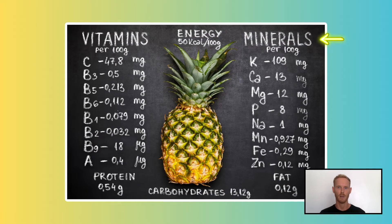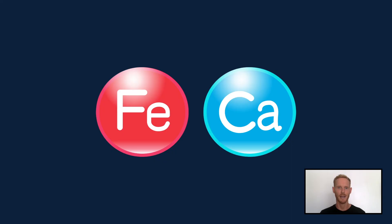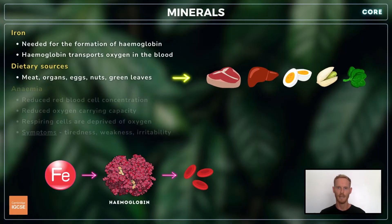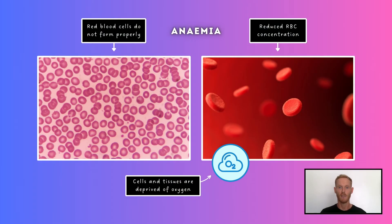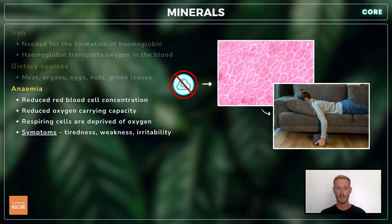Mineral ions, sometimes referred to as mineral salts, are needed in small quantities and are essential for a wide range of bodily functions. There are two you need to know about: iron and calcium. Iron is found in red meat, organ meats, eggs, nuts, and green leafy vegetables. It forms part of the molecule haemoglobin, found in red blood cells, which transports oxygen throughout the body. Not consuming enough iron restricts red blood cell formation, leading to a reduction in red blood cell concentration and oxygen-carrying capacity — a condition known as anaemia. Those affected often feel tired, weak, and irritable.